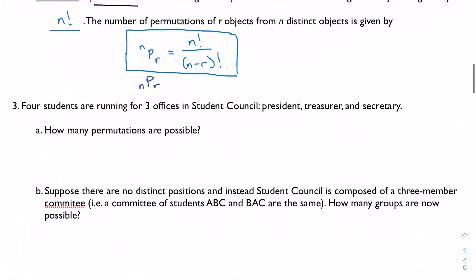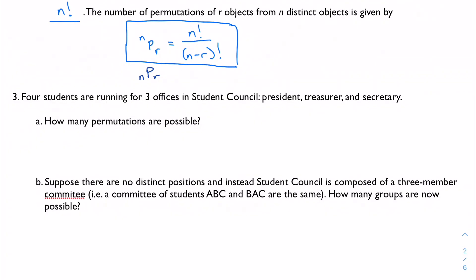We're going to start problem three here, and then I'll pick it up in the next video, because I don't want it to get too long. But here I've got that four students are running for three offices in student council: president, treasurer, and secretary. How many permutations are possible? This is a job for nPr.